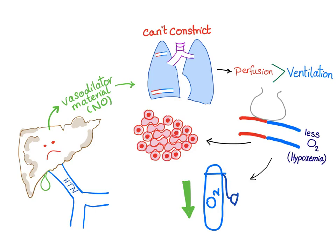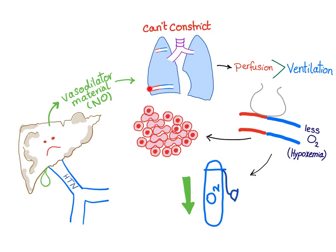However, in hepatopulmonary syndrome, we cannot vasoconstrict in the lung. Why? Due to nitric oxide release from the liver. The liver is cirrhotic or suffers from portal hypertension, releases nitric oxide into the bloodstream, which goes into the lung. Here is the alveoli and the blood vessel — the blood is flowing very quickly from the arterial end to the venous end, so there is no time for gas exchange. This is arterial venous shunting.